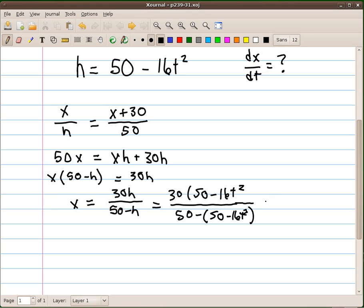I'll do a little simplifying here. And on this side, when I distribute that 30, I get 1500 minus 480t squared over 50 minus 50 is 0. And then a negative, negative 16t squared is 16t squared.